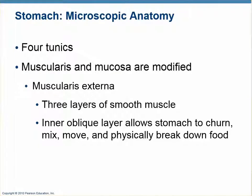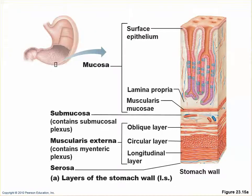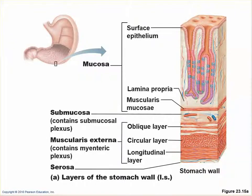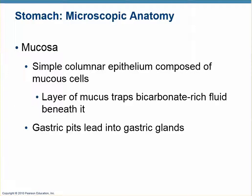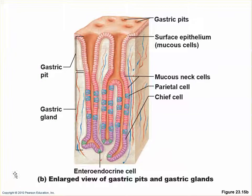There are three layers of smooth muscle, and the mucosal layer is divided into pits. There are basically four types of cells. The chief cells produce pepsinogen, the inactive form of the digestive enzyme that breaks down proteins. It gets activated in the stomach by hydrochloric acid and turns into pepsin.